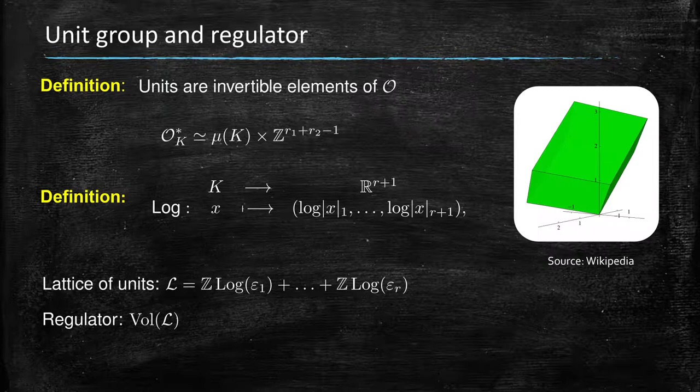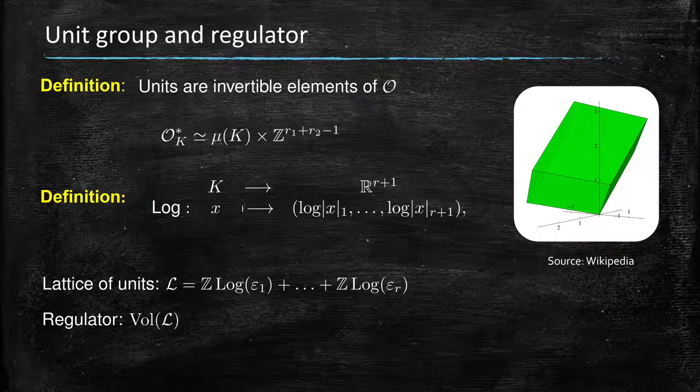Now, unfortunately, we need to talk about unit group and the regulator when we talk about class group computations. Even though this might not relate directly to isogenies and isogeny-based crypto, anytime we need results in the class group, we usually, with the efficient methods that we know, we need to talk about the unit group. So the units are invertible elements of the ring...